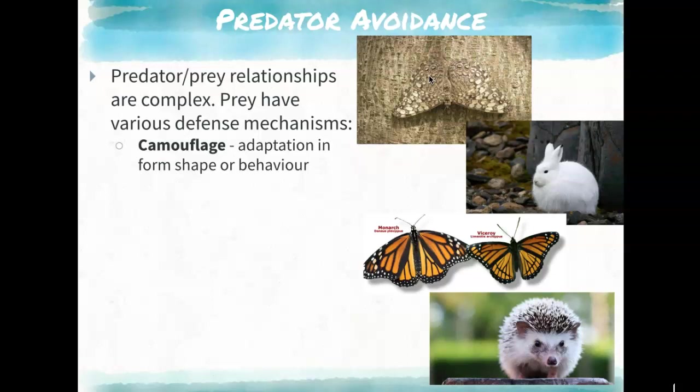Another example is the snowshoe hare. Snowshoe hares are brown in the summer and have a white coat in winter. This coat change depends on the amount of daylight in each season — as days get shorter in winter, the hare will shed its coat and grow a new one. This doesn't depend on the weather itself.